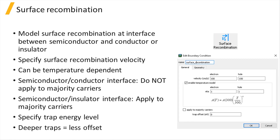The recombination processes in a semiconductor can be divided into two major categories: bulk recombinations, which were discussed in the material section of this course, and surface recombinations. The surface recombination process concerns the charge behavior at the interface between a semiconductor and a semiconductor, or a semiconductor and an insulator, where electrons and holes interact with trap states at the surface and recombine. The effectiveness of surface recombination is described by surface recombination velocity, chosen to reflect the non-ideal nature of the material surface.